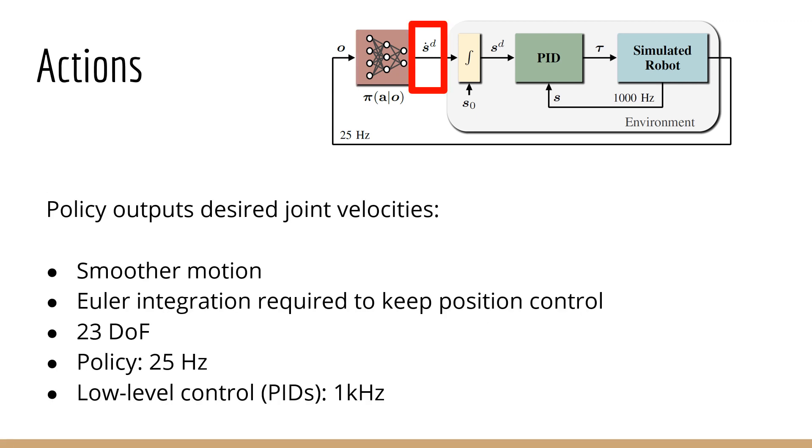Regarding the action space, the policy outputs 23 desired joint velocities rather than joint positions. This prevents target joint positions from being too distant from each other in consecutive steps. Especially at training onset, this would lead to jumpy references that cannot be tracked by the low-level PID controllers. Desired joint velocities are then integrated and fed as reference joint positions to the PIDs. New actions are produced at 25 Hz by the policy, while the low-level control loop runs at 1 kHz.